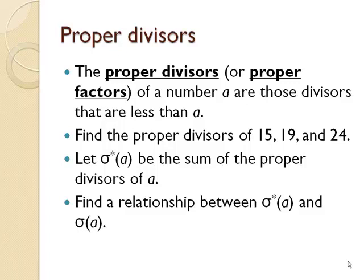A new function that are related to sigma is sigma star of A. And it's going to be the sum of just the proper divisors. So the sigma star of 15 would be 1 plus 3 plus 5, which is 9. I'd like for you to determine the relationship between sigma star of A and sigma of A.